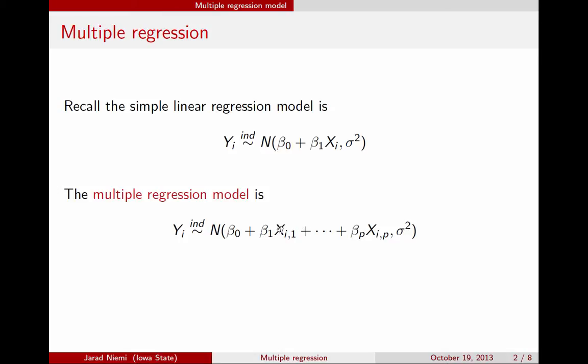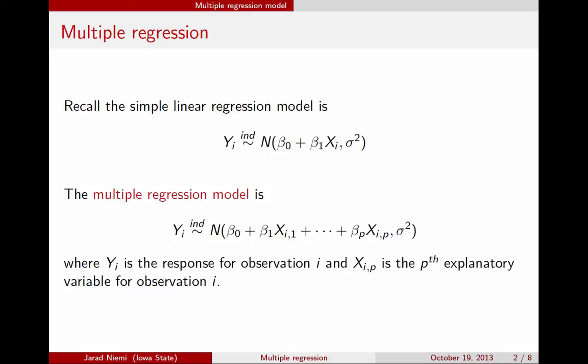To be clear on the subscript notation: xi1 is the first explanatory variable for observation i, and xip is the p-th explanatory variable for observation i. This allows us to have a number of explanatory variables that all help in telling us about the mean of the response. Notice that the variance is still constant after we've accounted for this mean structure.